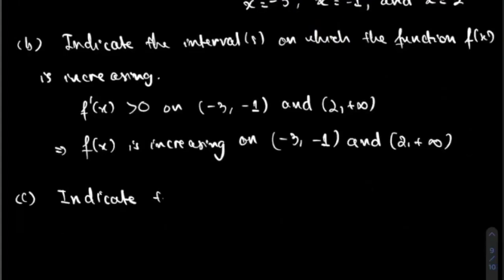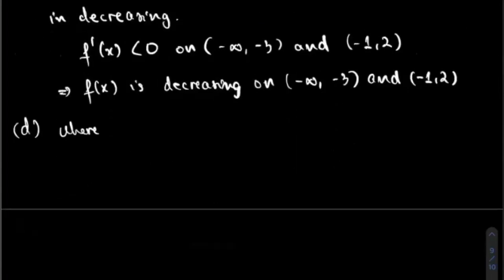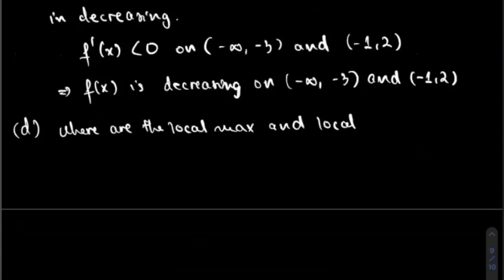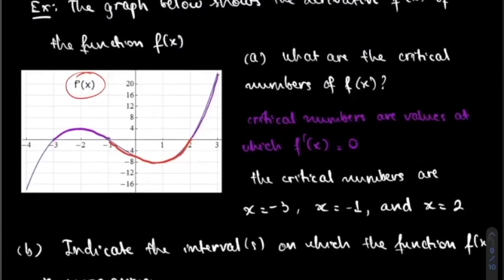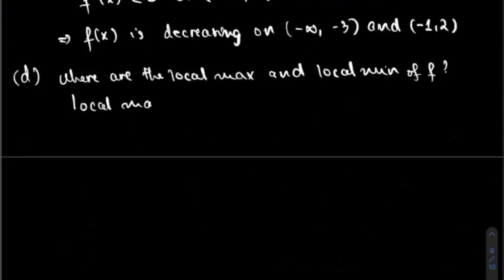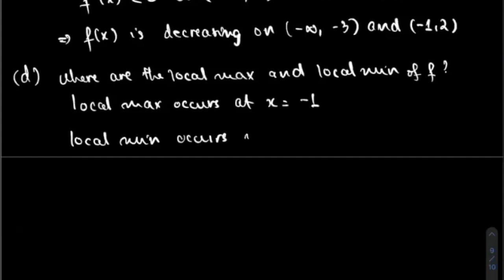Part C indicates the intervals on which f of X is decreasing. We also want to know the local maximum and local minimum of f. Thinking about how the first derivative changes sign — from positive to negative and from negative to positive — the local maximum occurs at X equal to negative one, and the local minimum occurs at X equal to negative three and X equal to two.